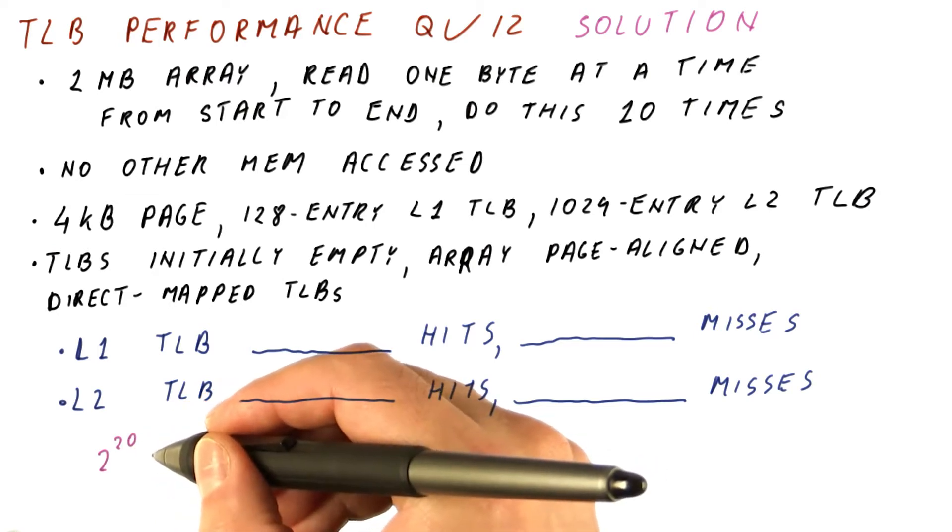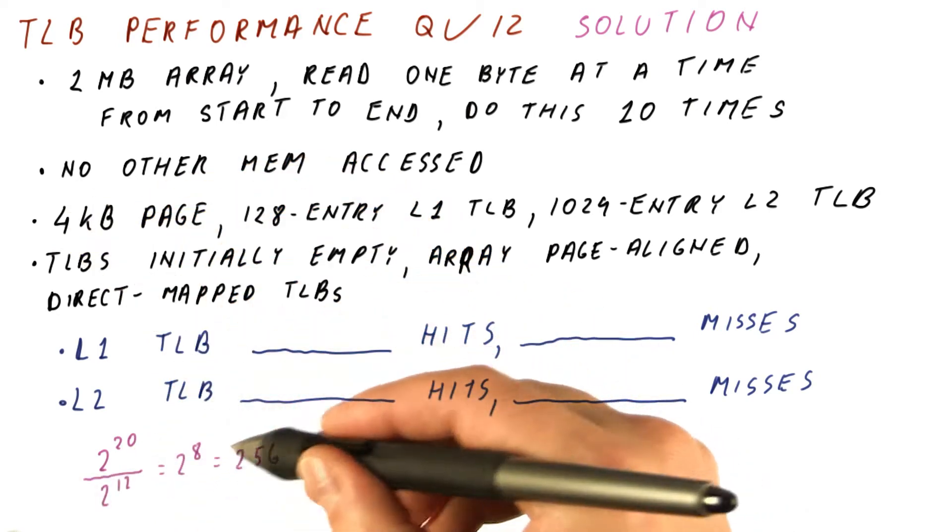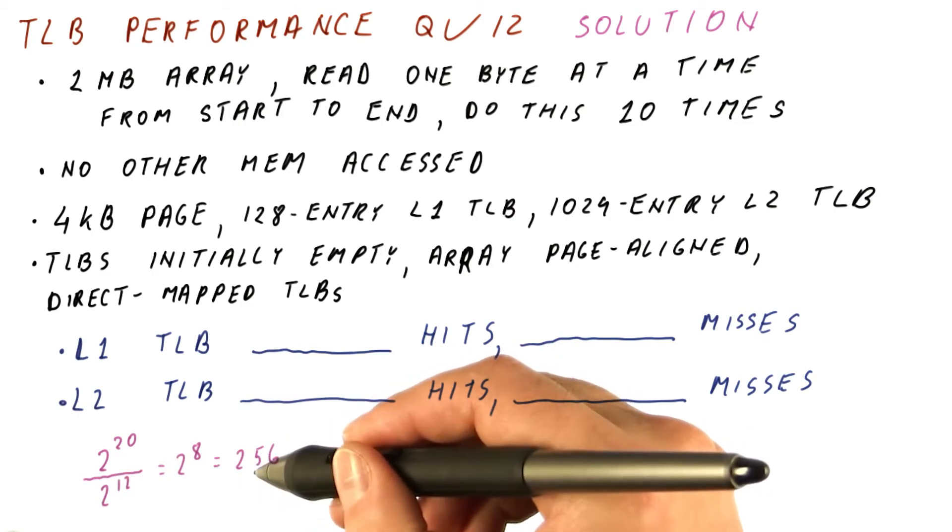Our page is four kilobytes, which is two to the twelfth. So there are 256 pages in this array.